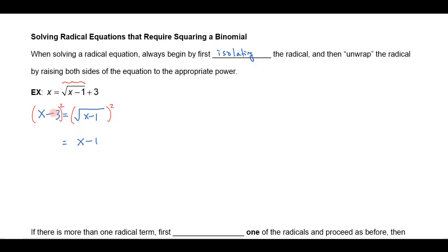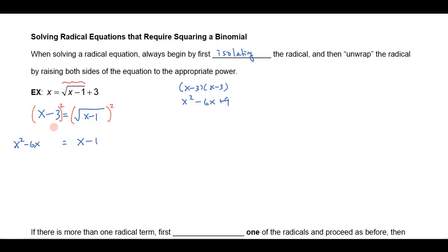And over here when I square this, remember when you square a binomial, you're not going to get just x squared minus 9 or even x squared plus 9. That's a FOIL problem — that's x minus 3 times x minus 3. So that's x squared, and doing the outers, that's negative 3x, and there's another negative 3x, that makes negative 6x plus 9. We have a special product: I take x and square it, then I take x times negative 3 which is negative 3x and double it, giving me negative 6x, and then negative 3 squared is plus 9.